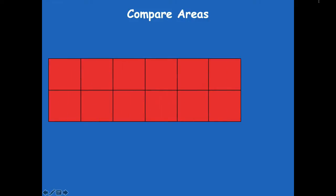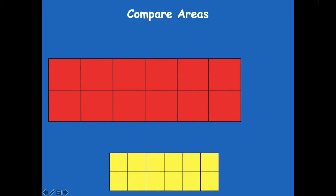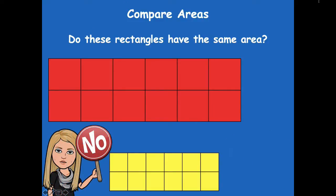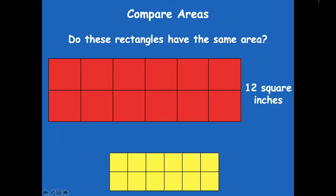Let's start with comparing areas. Let's say I have 12 square inch tiles and 12 centimeter tiles. I created similar rectangles — they both look the same shape. Do these rectangles have the same area? Well, they both have 12, but the size is different for each one of those tiles. One is an inch tile and one is a centimeter tile, so they're not going to have the same area. This is 12 square inches and this is 12 square centimeters. Centimeters are smaller than inches, so the square inch tile is going to have a larger area than the centimeter tile.